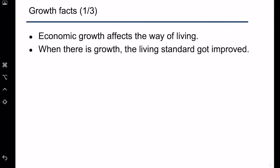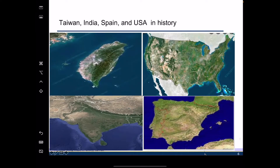What I want to do is show you photos for four economies — Taiwan, India, Spain, and the US — and compare photos from the early 1900s versus photos from the early 2000s, to see how economic development affects the way of living for people in these economies.